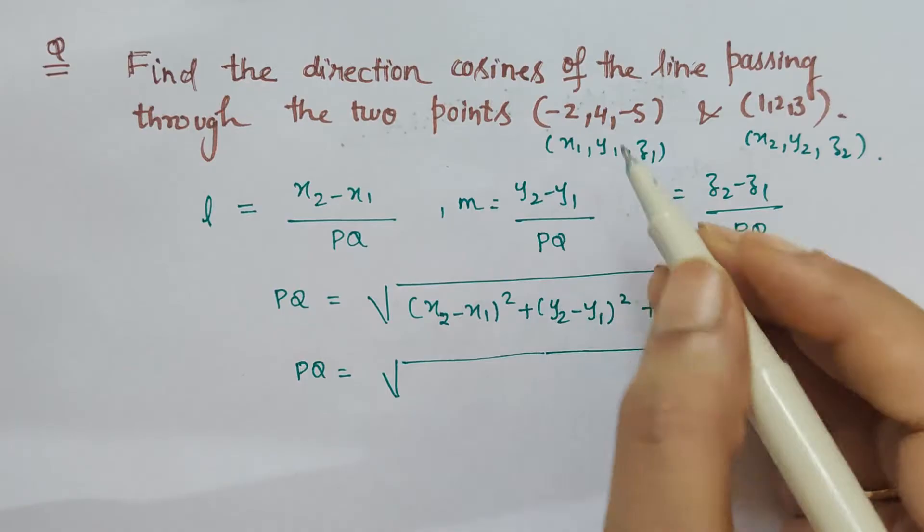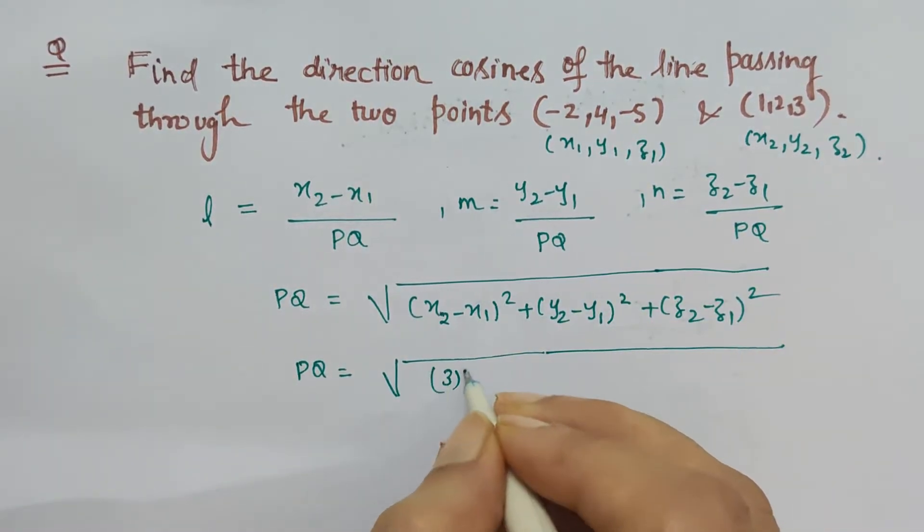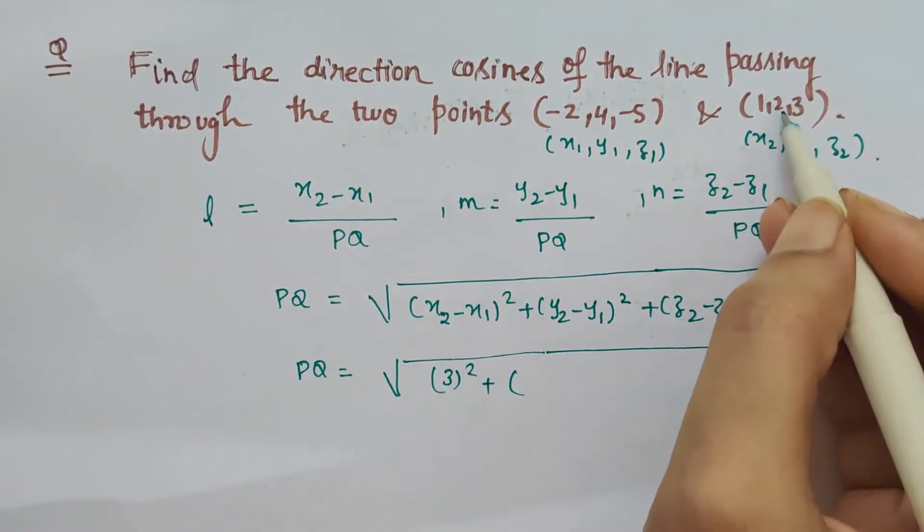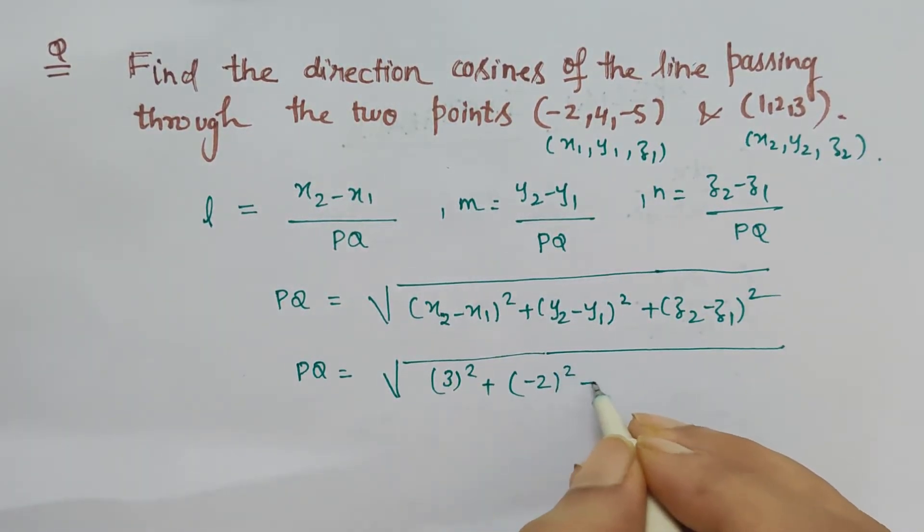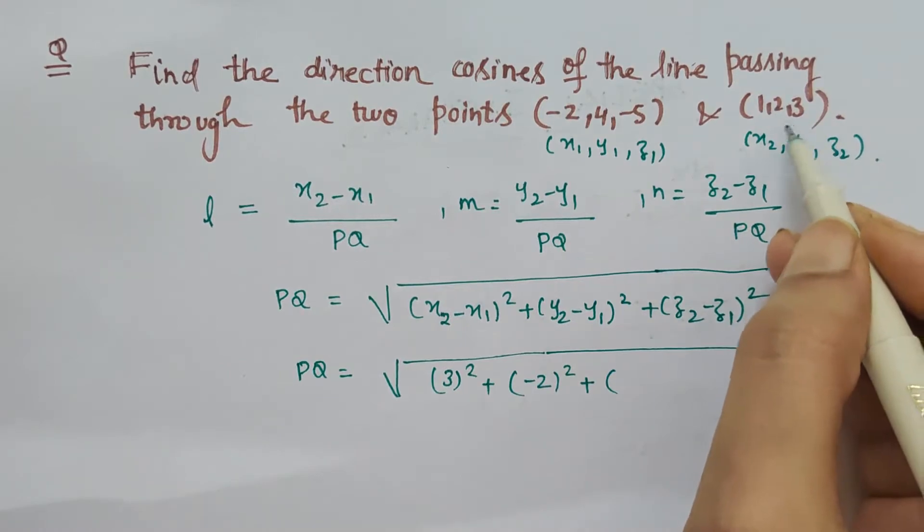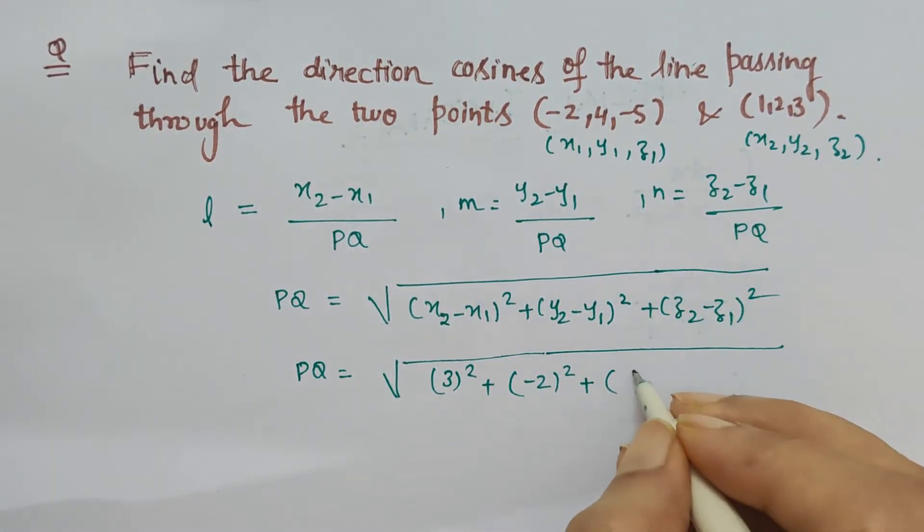Plus y2 which is 2 minus 4 is minus 2, so minus 2 square. Plus z2, 3 minus minus 5 is plus, so 3 plus 5 is 8 square.